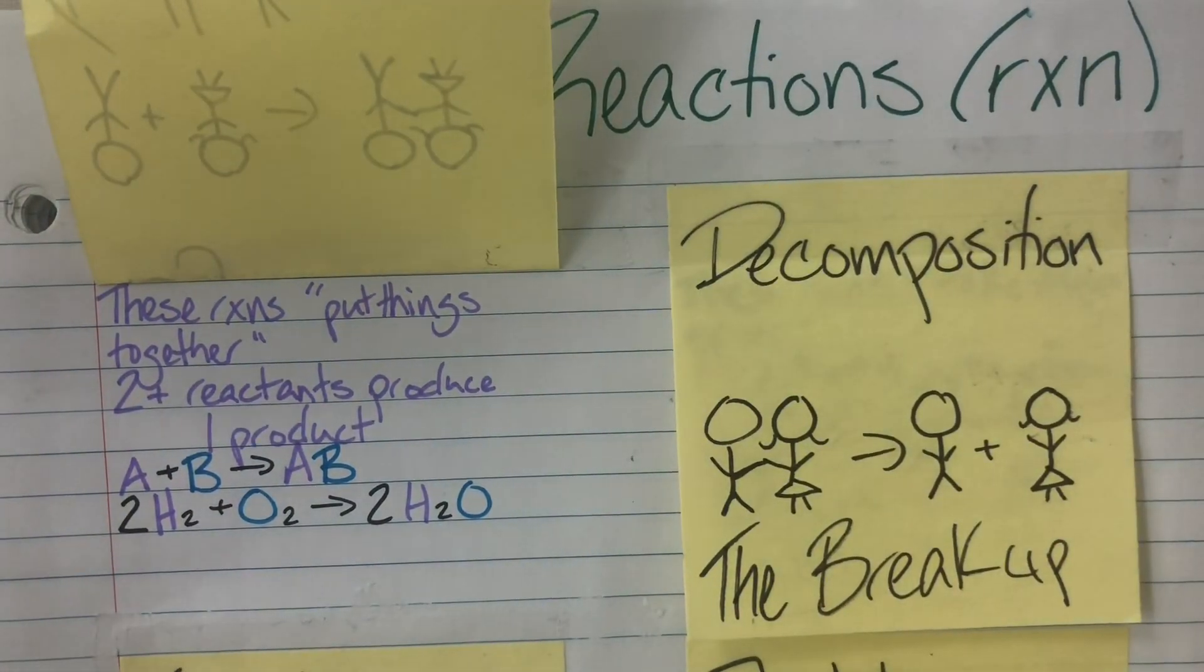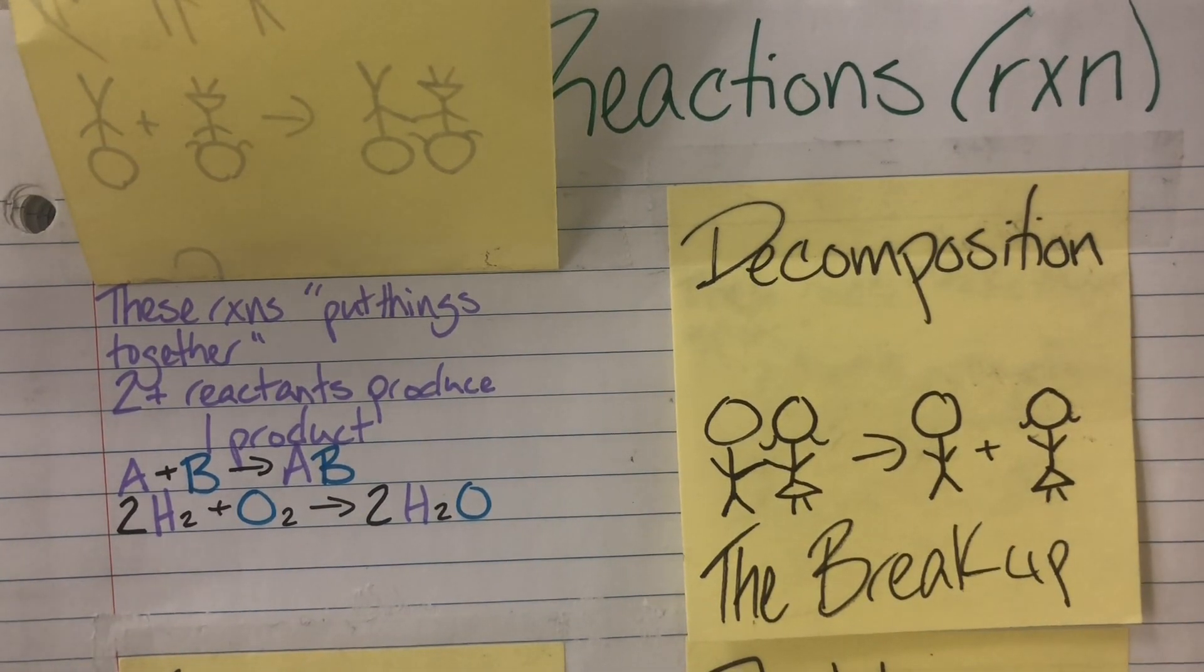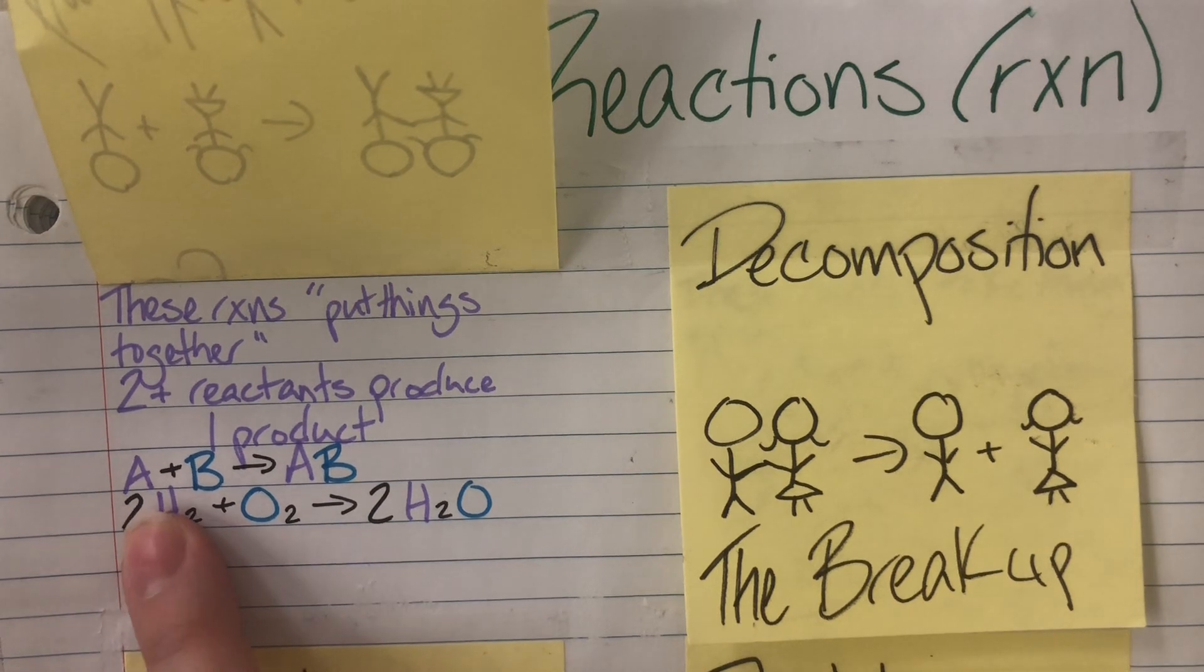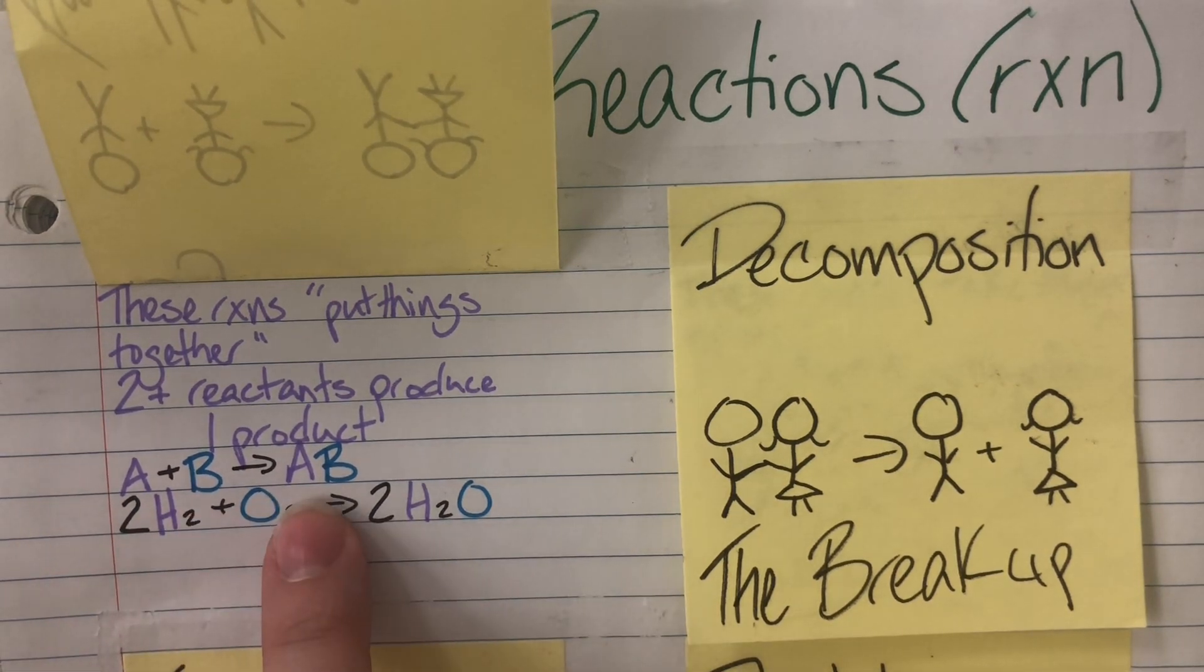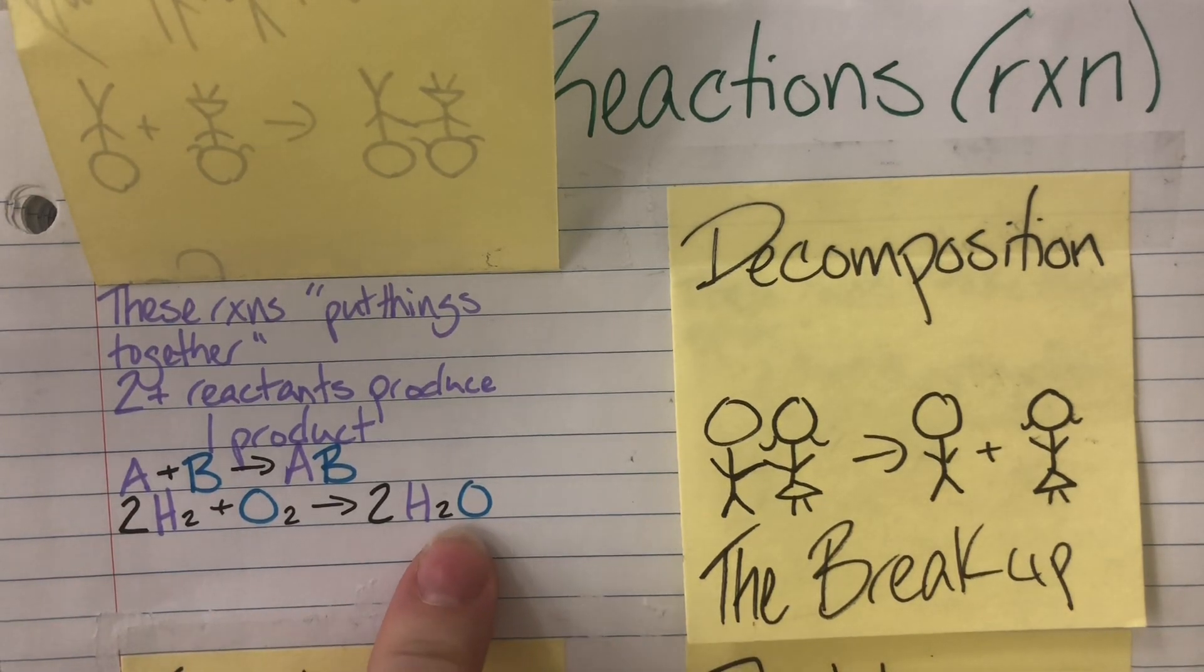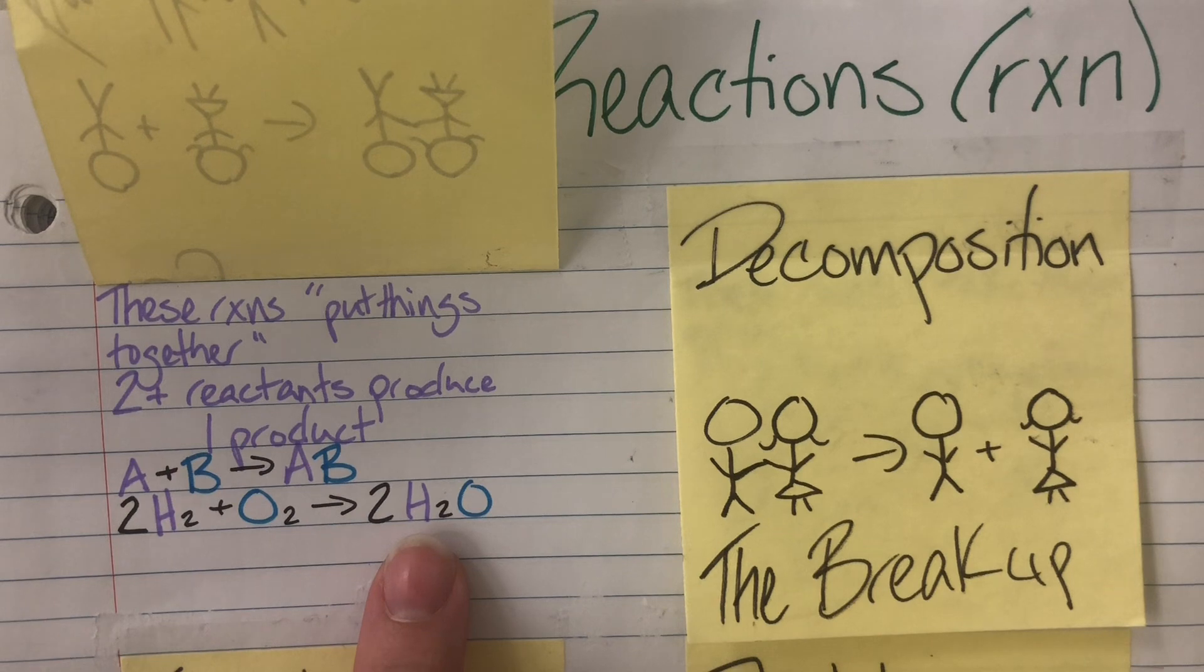Synthesis reactions are going to put things together. I am always going to have two or more reactants on the left hand side of the arrow. That's what a reactant is. It's whatever is on the left hand side of the arrow and I will only ever produce one product. Letter example would be A plus B going to AB. Actual synthesis reaction example would be hydrogen plus oxygen forming dihydrogen monoxide or water.